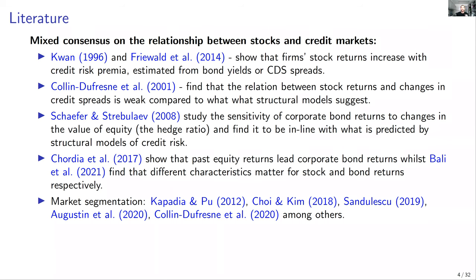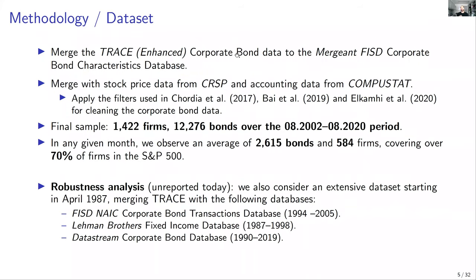There is also a large related literature on market segmentation. Relative to all these papers, the key contribution of our paper is to focus on the dependence — covariance and correlation — between stock and bond in a predictive way, showing the importance of default risk in predicting this dependence, quantifying it economically, proposing a trading strategy, and developing a theoretical framework that rationalizes these findings.